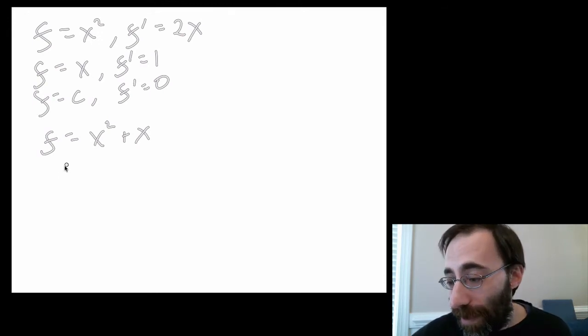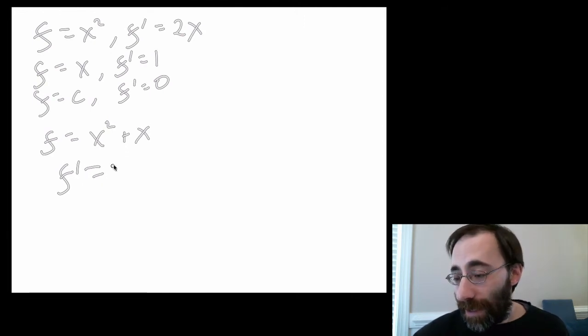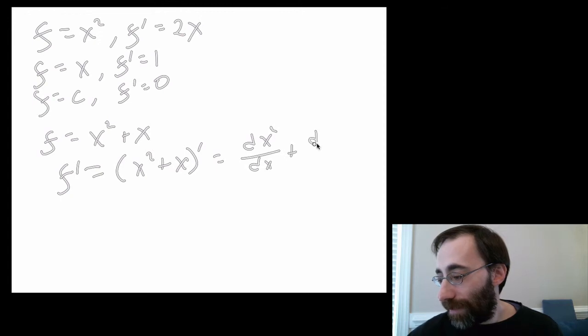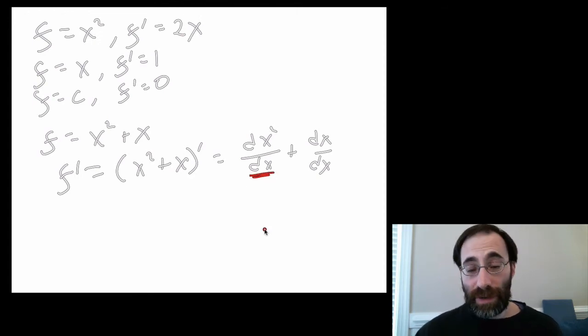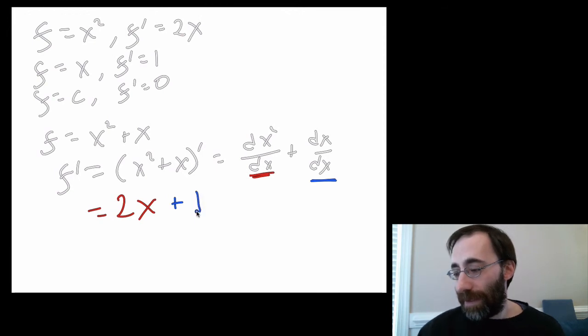We know the derivative of f, which is f prime, is going to equal the derivative of this thing, which equals the derivative of x squared dx plus the derivative of x dx. We said this thing over here is going to equal 2x and we said this thing over here was going to equal 1 and we're done. That's the derivative.